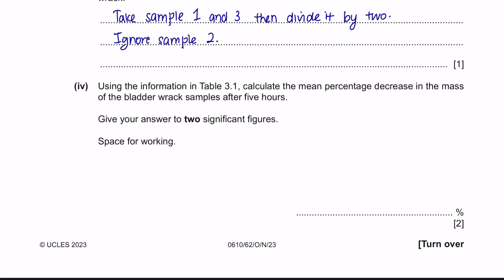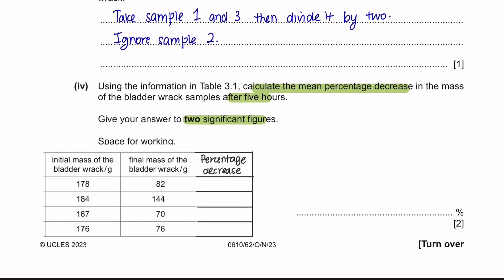Next part 4, using the information in table 3.1, calculate the mean percentage decrease in the mass of the bladder rack samples after 5 hours and give your answer to two significant figures. To calculate the mean percentage decrease, we will first calculate the percentage decrease for sample 1 and sample 3. Since sample 2 had an anomalous result, we will ignore sample 2.